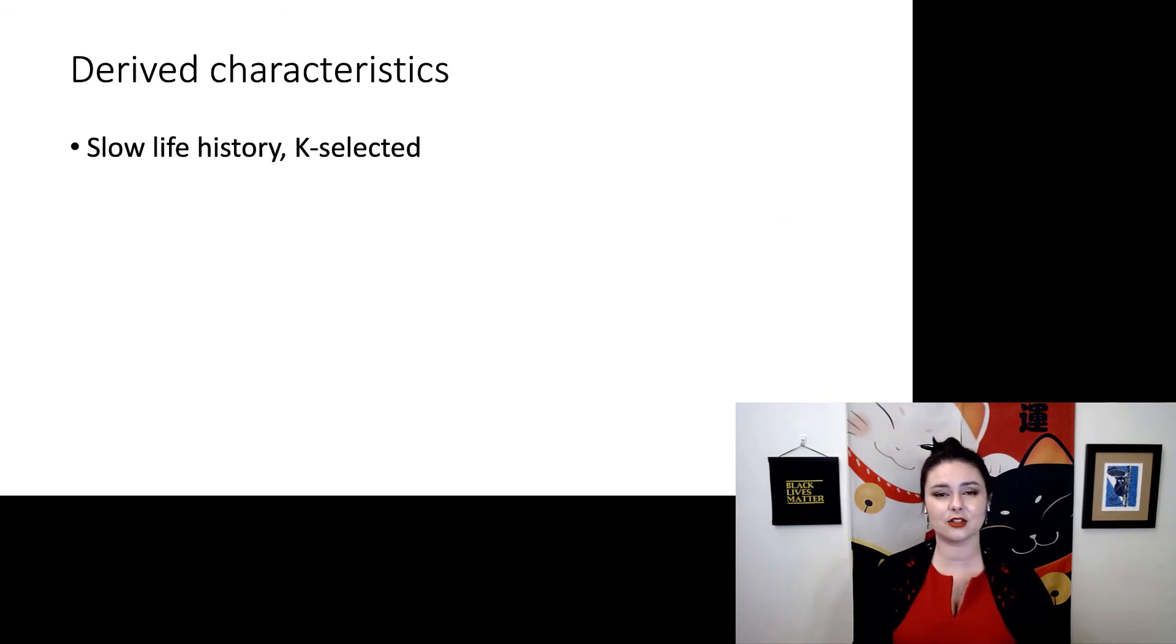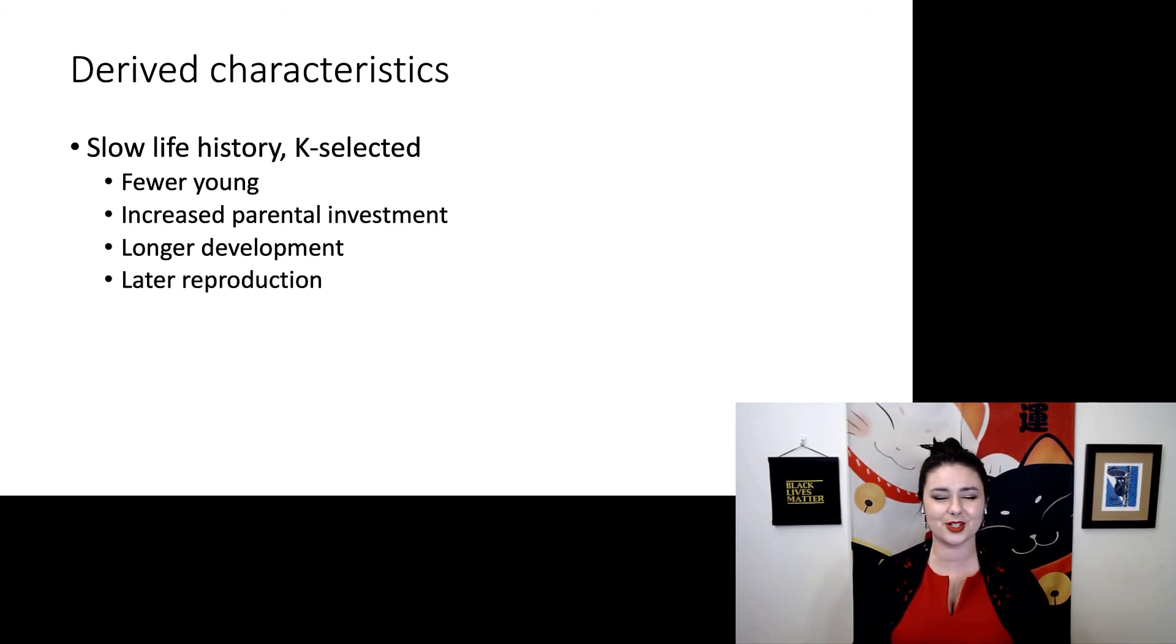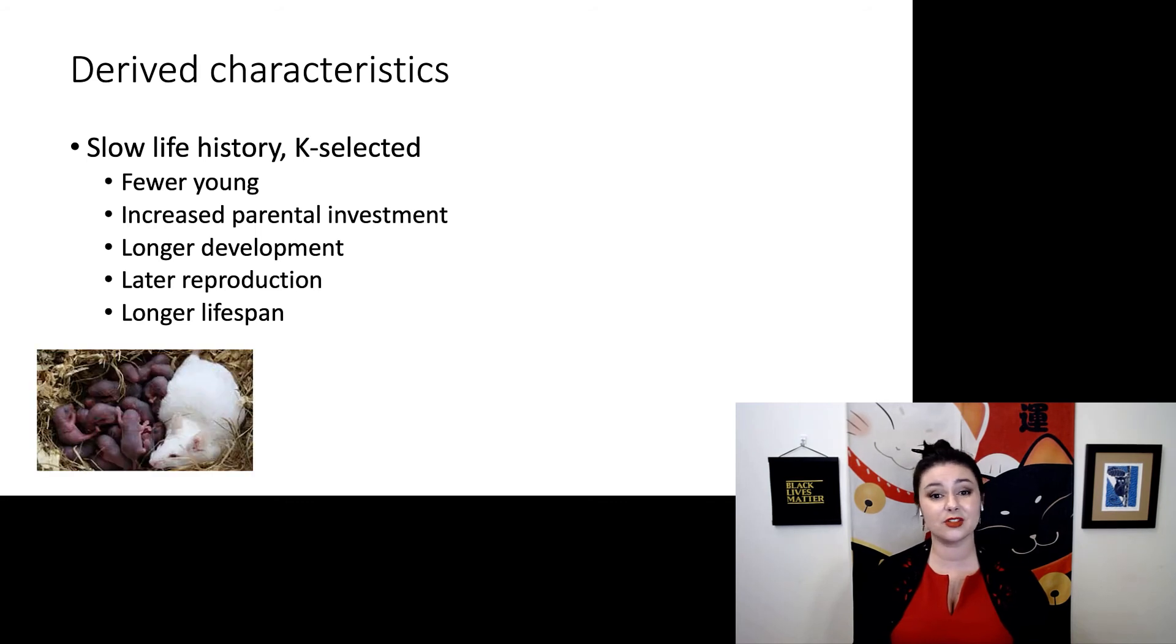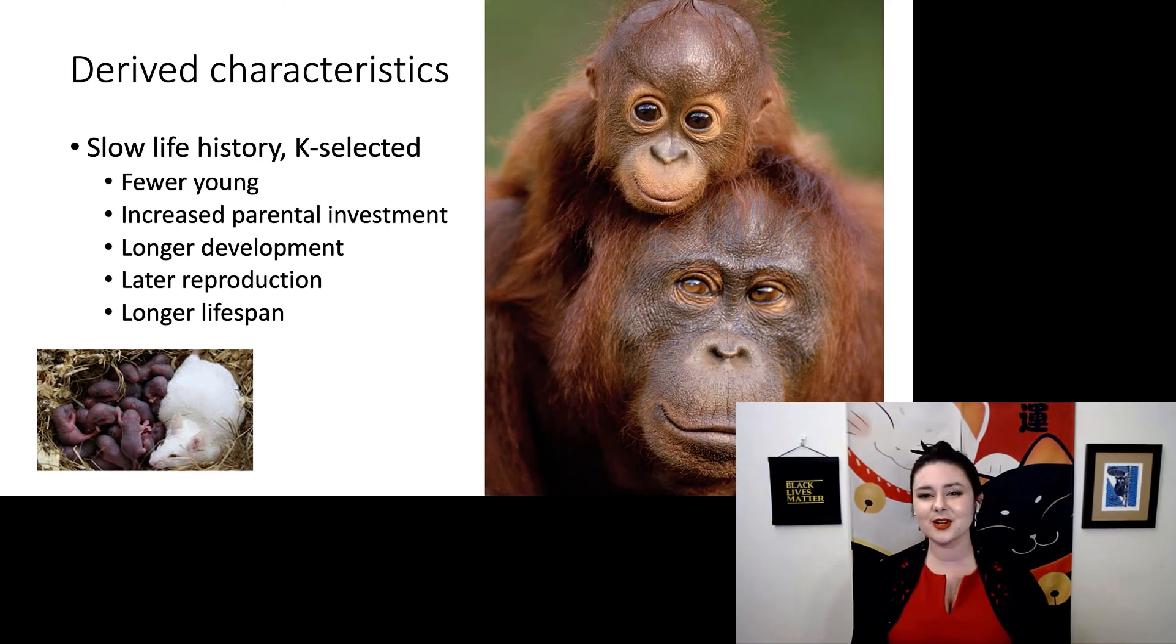Some behavioral characteristics. We see something called a slow life history. You would also hear this called K-selected. So this means we see fewer young. Almost all primates only give birth to one child at a time. And we see increased parental investment. Both parents are investing in raising their young more often. And we see a longer development time. It takes primates longer to grow up. And, of course, this also means we have later reproduction and a longer lifespan. This is in contrast to most other mammals, which have a different strategy. They have a lot of babies all at once. And they don't have particularly long lives. Instead, primates are choosing to dedicate more time to each of their children. And really, we're seeing quality over quantity.